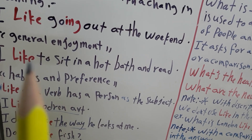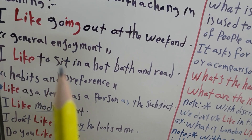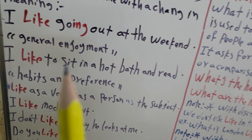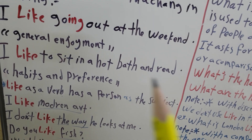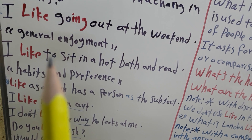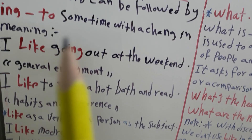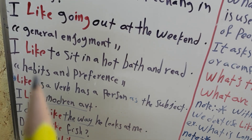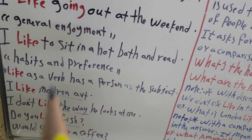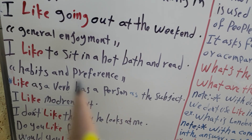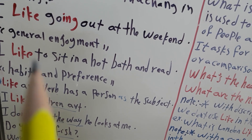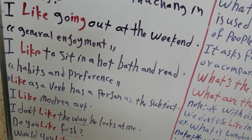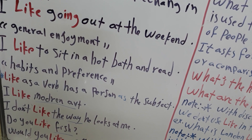Another example: I will use 'like' plus 'to' plus infinitive verb. 'I like to sit in a hot bath and read.' I use 'like' followed by 'to' as stated in this rule. This sentence means habits or habit and preference — if I use 'like' followed by 'to', I use it to say what my habit or preference is.